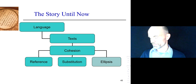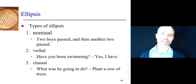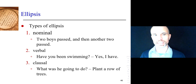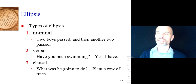Ellipsis fits in at the level of reference and substitution. The types are nominal, verbal, and clausal. If you can remember those three types and the fact that ellipsis means gaps in the language that can be understood from the co-text or the context, you've got a firm grasp of what's going on. We'll talk about it more as time goes on. Thank you very much, take care, bye.